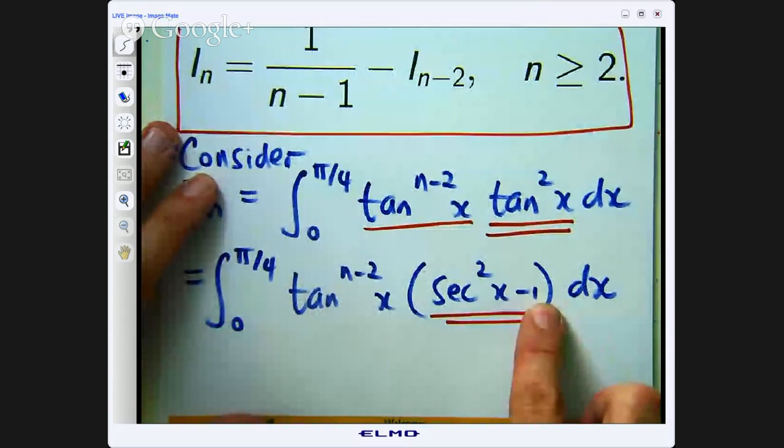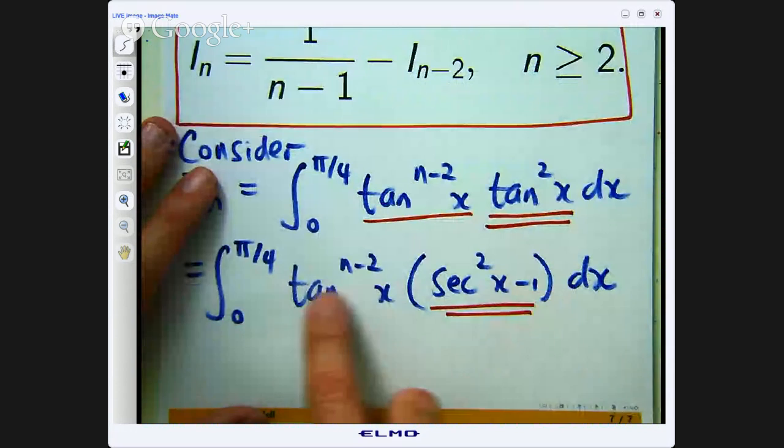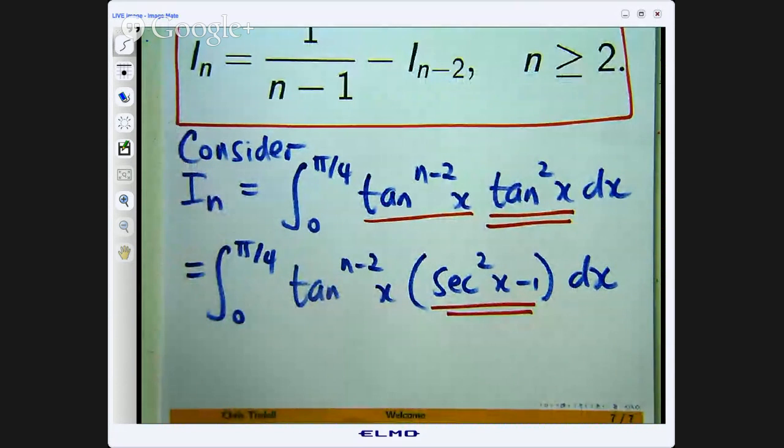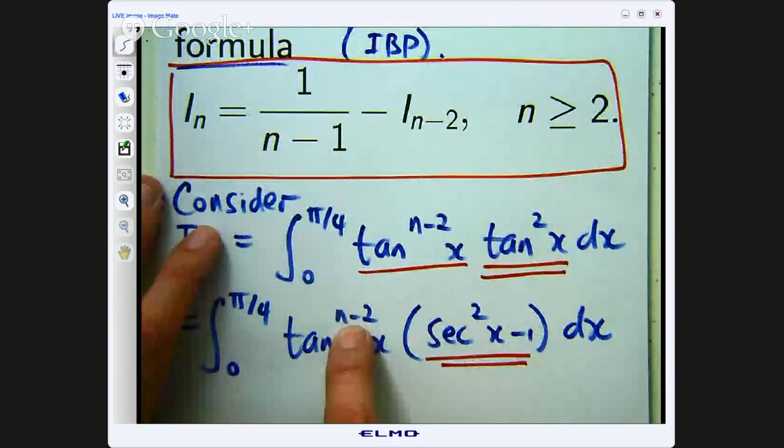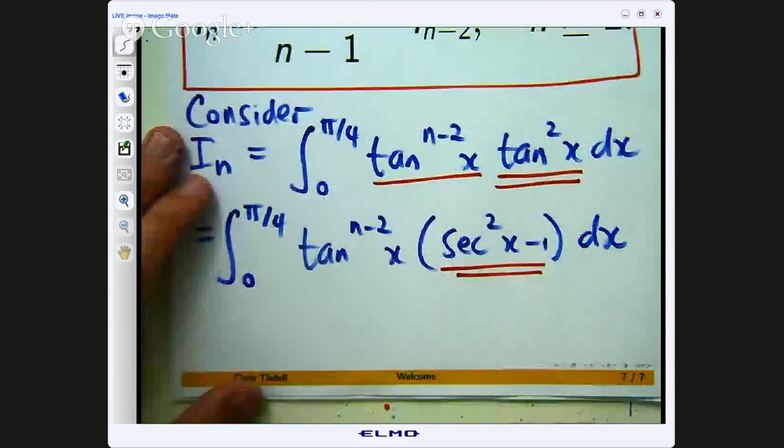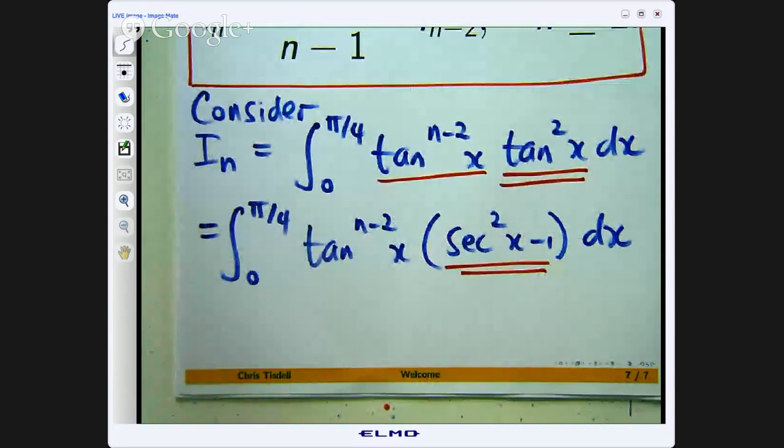If I expand this out, the second term will give me 1 times this, which gives me an I sub n minus 2, and I will be left with a product of tan and sec.